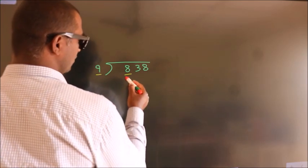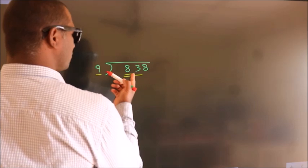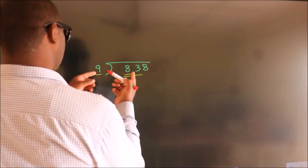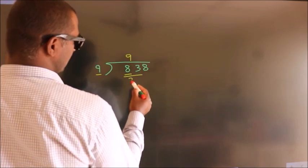So we should take two numbers, 83. A number close to 83 in the 9 table is 9 times 9 equals 81.